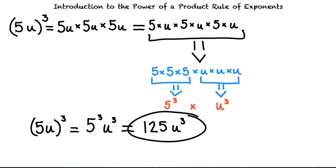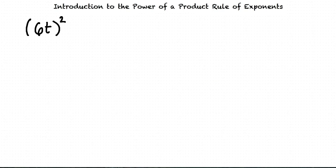Let's try another example. Let's try the problem 6t squared. Well, I can write this as 6t times 6t, and then I can put the numbers next to each other and the variables next to each other to get 6 times 6 times t times t. 6 times 6 is 36, and t times t is t squared. So our final answer is 36t squared.